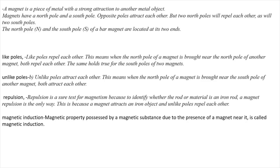When the North Pole of a magnet is brought near the South Pole of another magnet, both attract each other. What is repulsion? Repulsion is a sure test for magnetism because to identify whether a rod or material is an iron rod or a magnet, repulsion is the only way. A magnet attracts an iron object, but unlike poles repel each other. Magnetic induction: the magnetic property possessed by a magnetic substance due to the presence of a magnet near it is called magnetic induction.